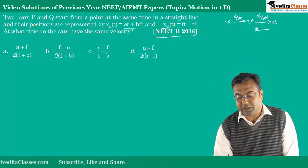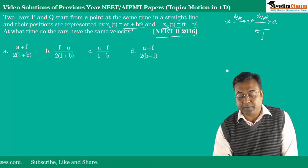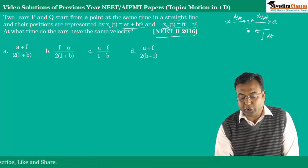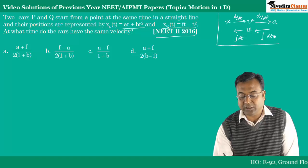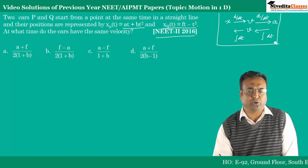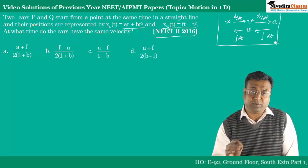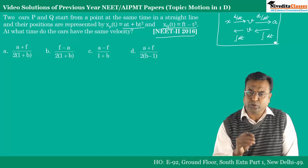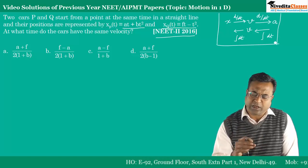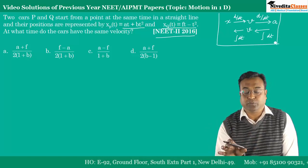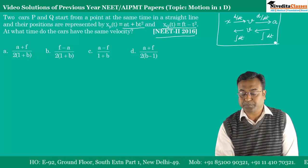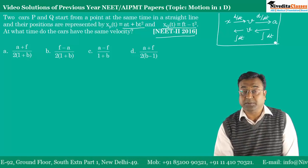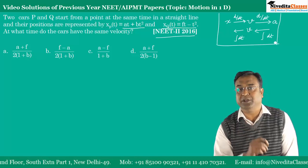If acceleration is given and velocity is to be found, we integrate with respect to t. And if velocity is given and position is to be found, we also integrate with respect to t. This relation holds true regardless of the type of motion — whether it is 1D, 2D, 3D, circular, or random. This formula is always true when the relation is given with respect to time.